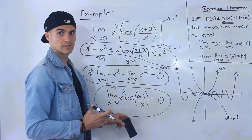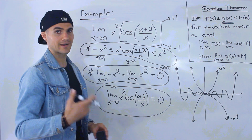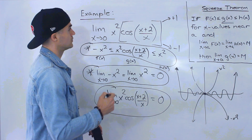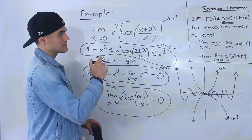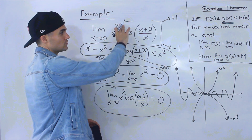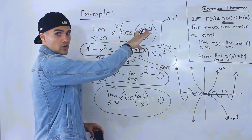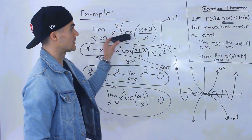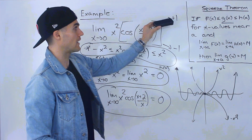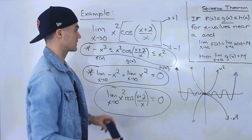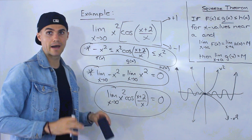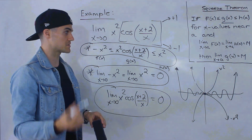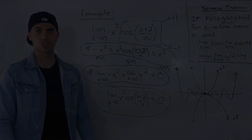Notice we didn't really do any algebra here — it's more of a theoretical way to solve this limit. Usually, the limits where you'll use the squeeze theorem will have a trig function attached, typically sine or cosine, because they both have a maximum of positive 1 and minimum of negative 1. You can then bound the complex function with simpler functions in order to apply the squeeze theorem.